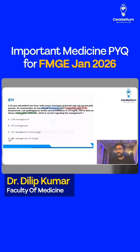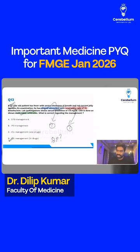Here it is literally impossible to calculate the CURB-65. Can you calculate CURB-65 here? First of all, you don't have the data. Even if you give confusion 1 point and respiratory rate 1 point, they are not given the BP at all. Age is anyway gone — 65. And they are not given the urea values. So you don't know — how can you even calculate CURB-65?